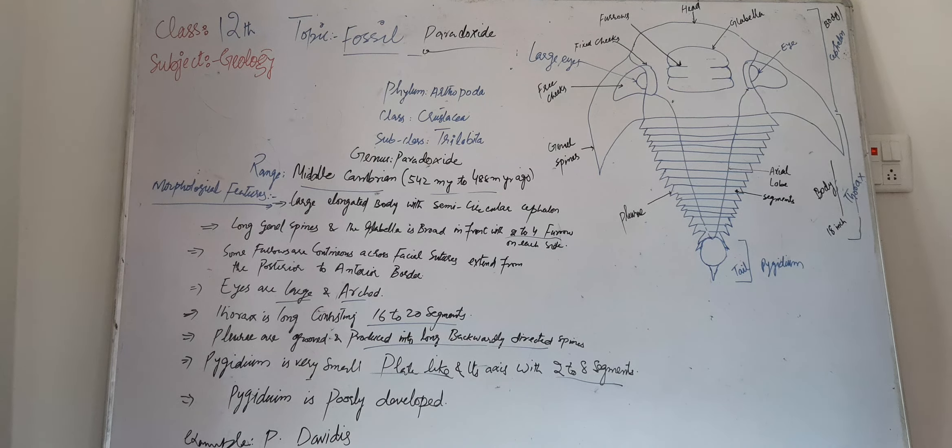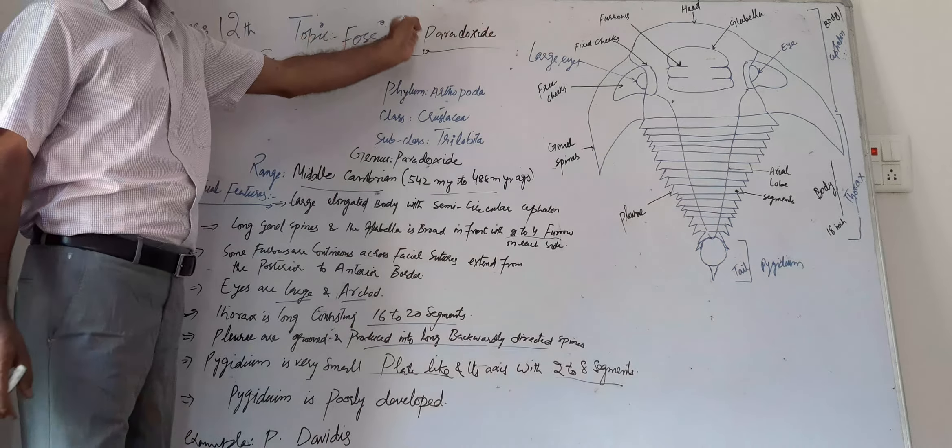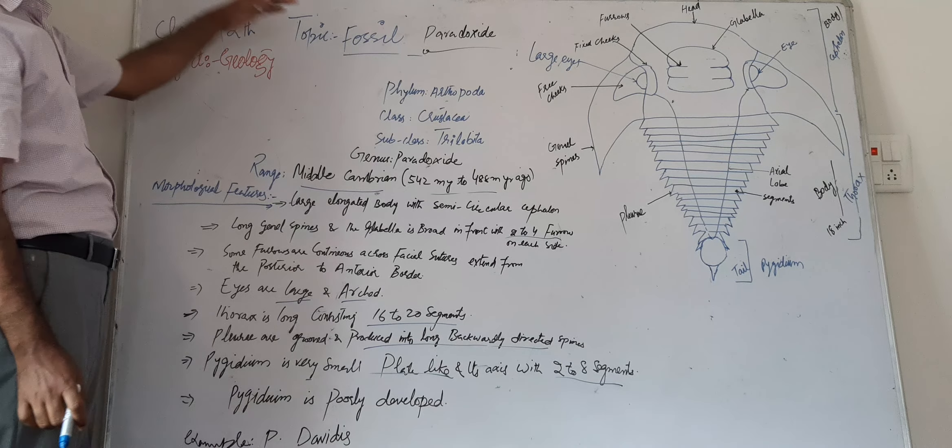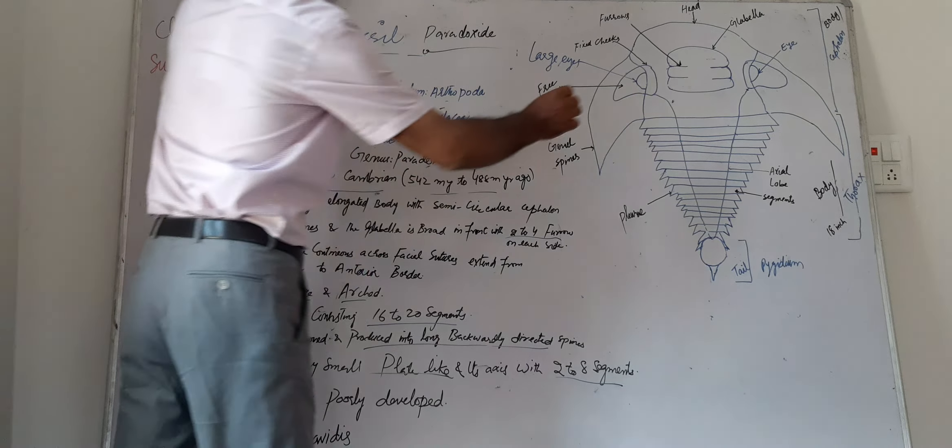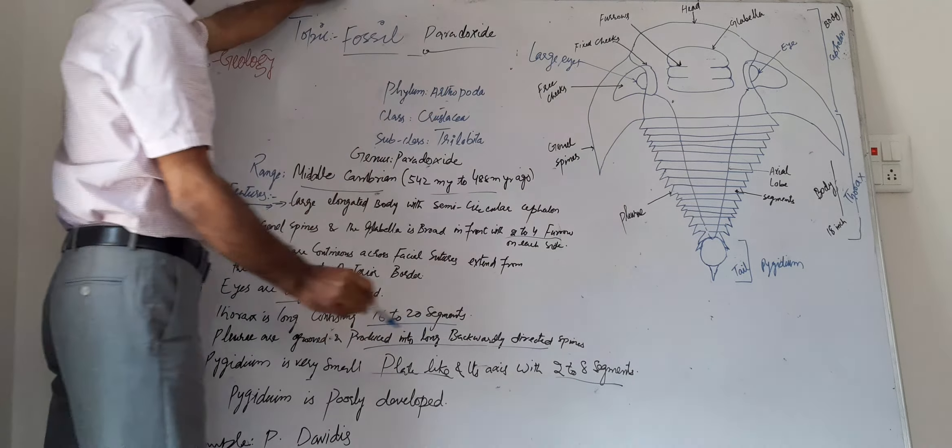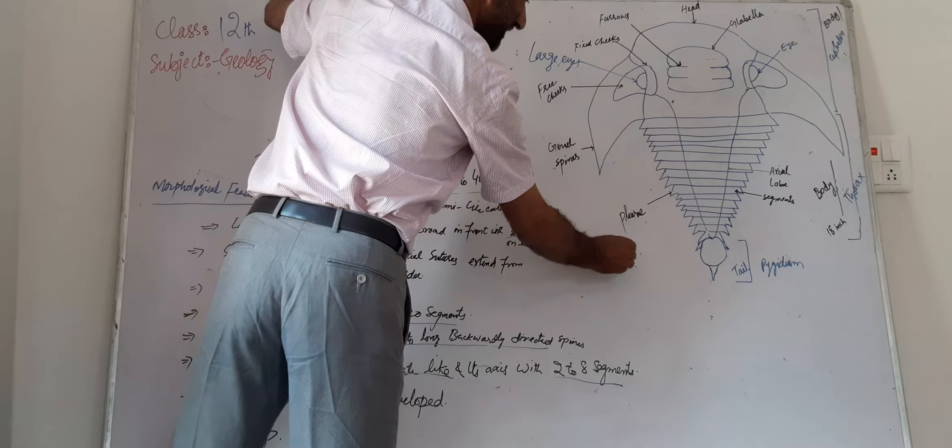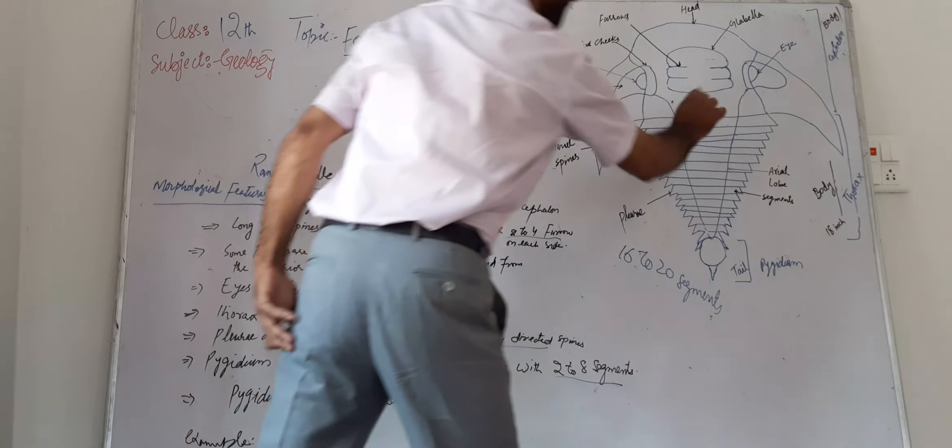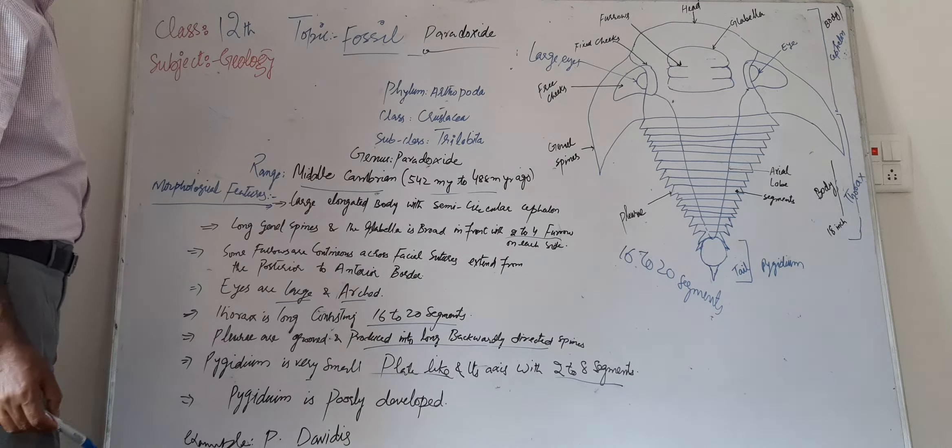Now when we see the thorax or body part of this shell, the thorax is very long and consists of 16 to 20 segments. When we compare this Paradoxides with the previous topic of the Calymene shell, which is also of Trilobita subclass, the thorax of Calymene shell has only 13 segments. But in this Paradoxides shell it is long because it contains 16 to 20 segments.